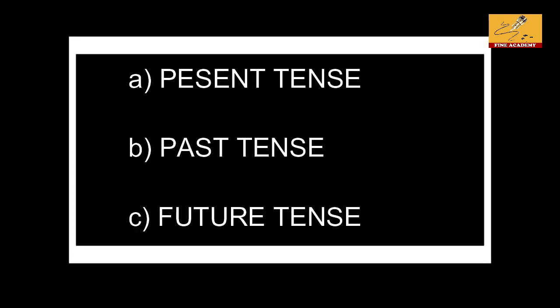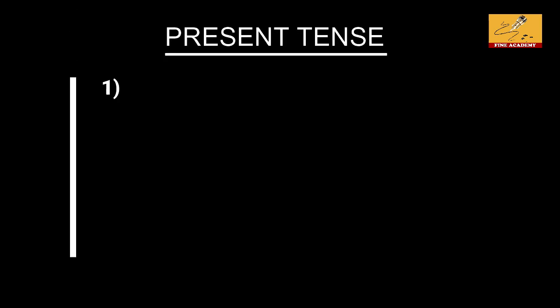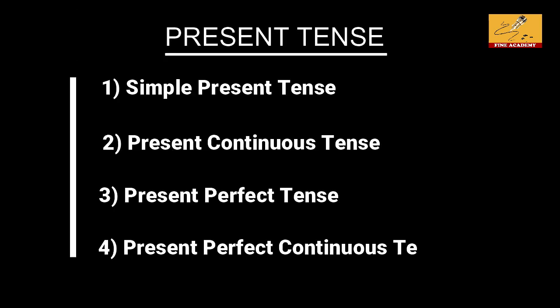Hello friends, we are going to tell you about tense — present, past, and future. The present tense has four forms: simple, continuous, perfect, and perfect continuous.